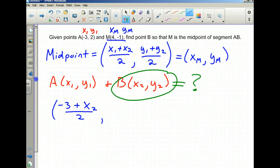Then for the y-coordinates, y₁ is 2 for point A, and y₂ is still unknown—that's part of the B coordinates—equals the coordinates of the midpoint. So we're given that M is (4, -1).